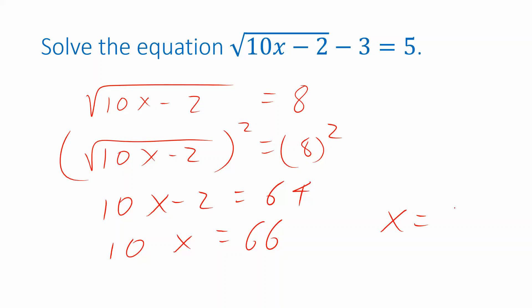So this time I get x is 66 over 10. You could reduce that to 33 over 5. Or you could write it as a decimal, 6.6. That's an exact value. There's no rounding there. So that's equal to x.